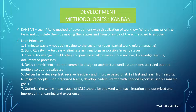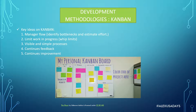Principle number seven is optimize the whole. Each stage of the software design cycle should be analyzed with each iteration and optimized and improved through learning and experience. There's feedback — if something didn't work well, make sure it gets optimized.